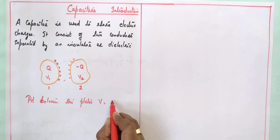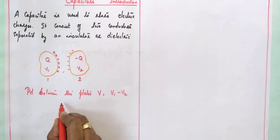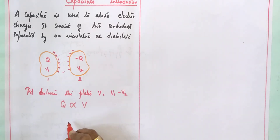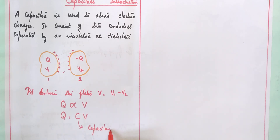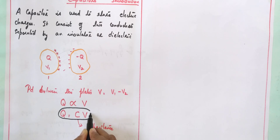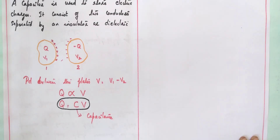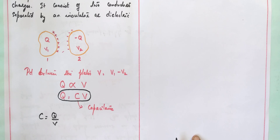The potential difference between the two plates is V equals V1 minus V2. Charge is proportional to potential difference, so we can write Q equals C times V, where the constant C is called capacitance. Capacitance is the ability of the capacitor to store electric charge, and it is given by the formula C equals Q divided by V.